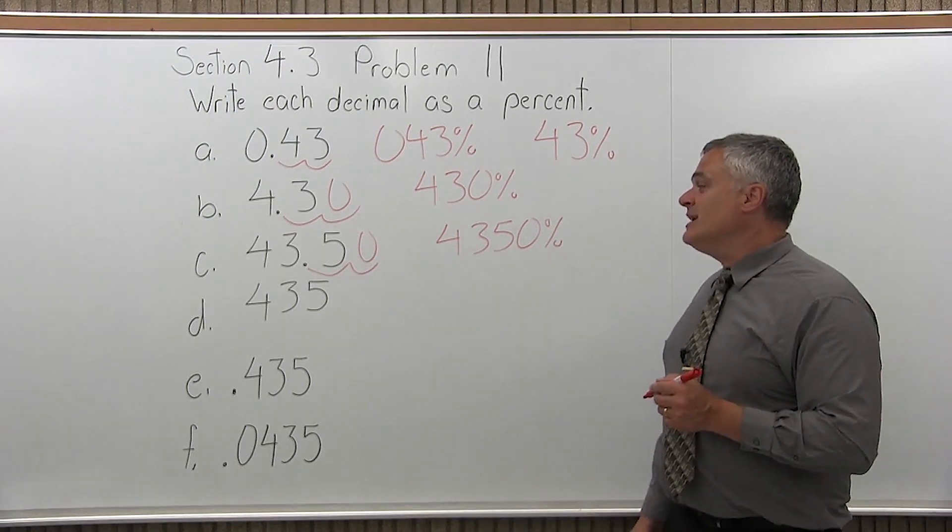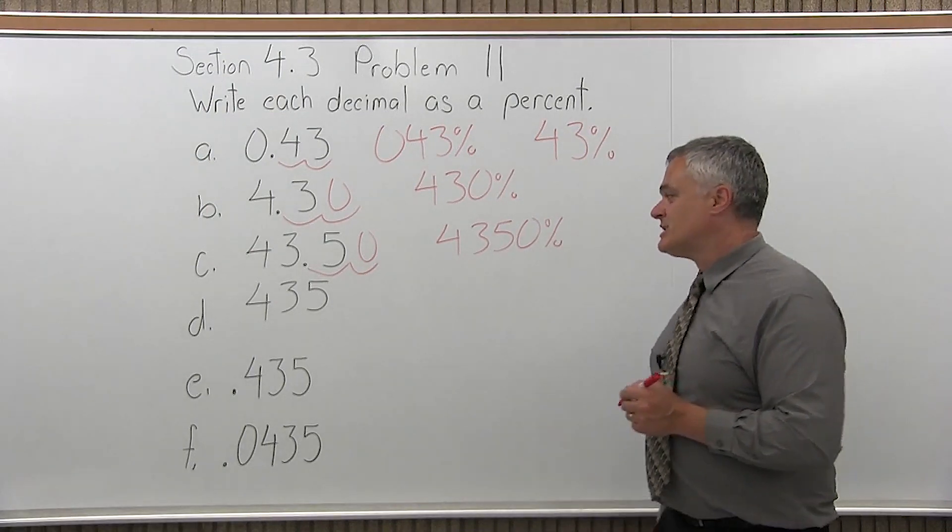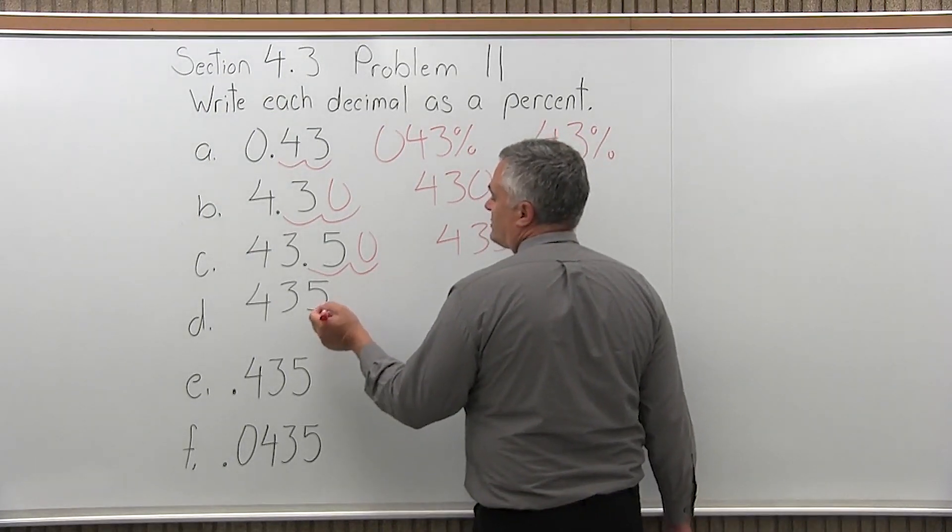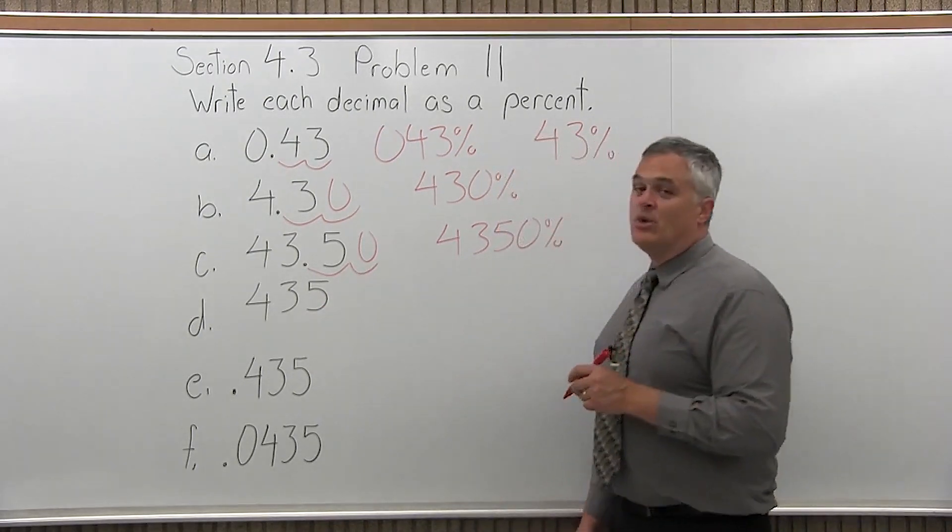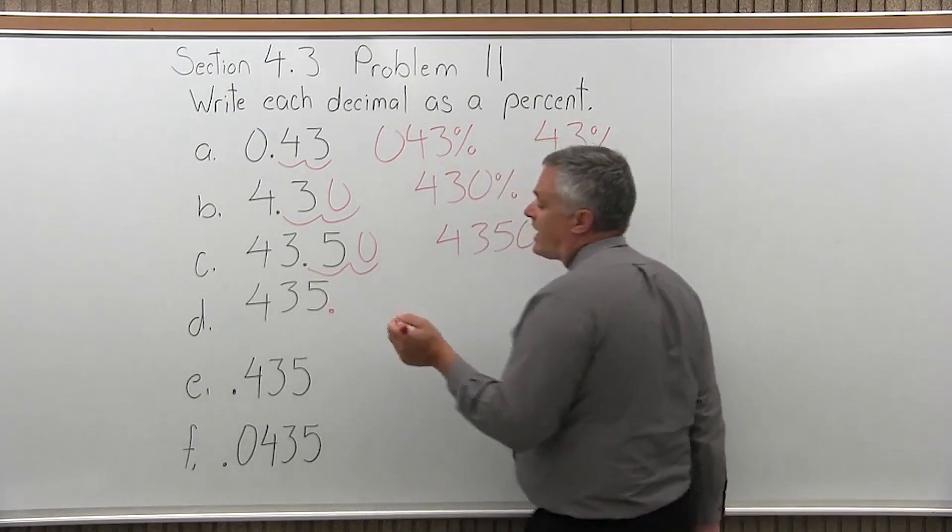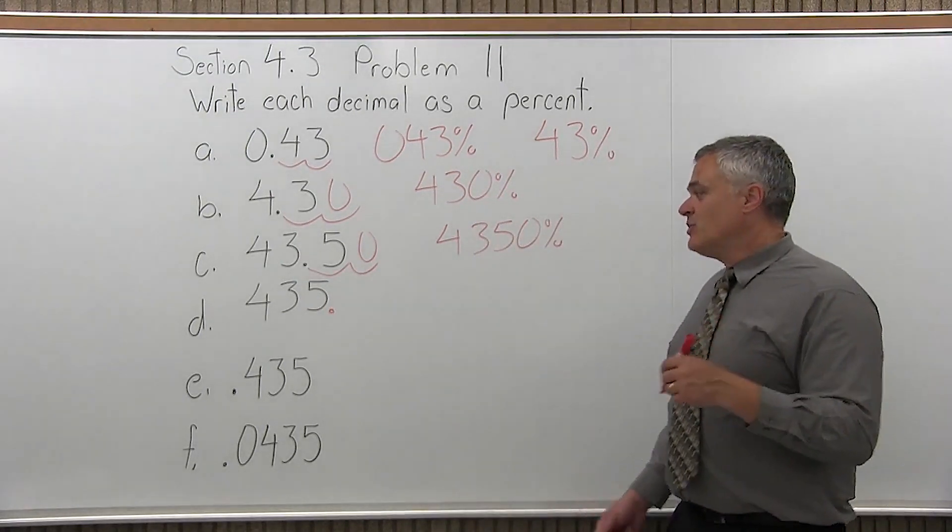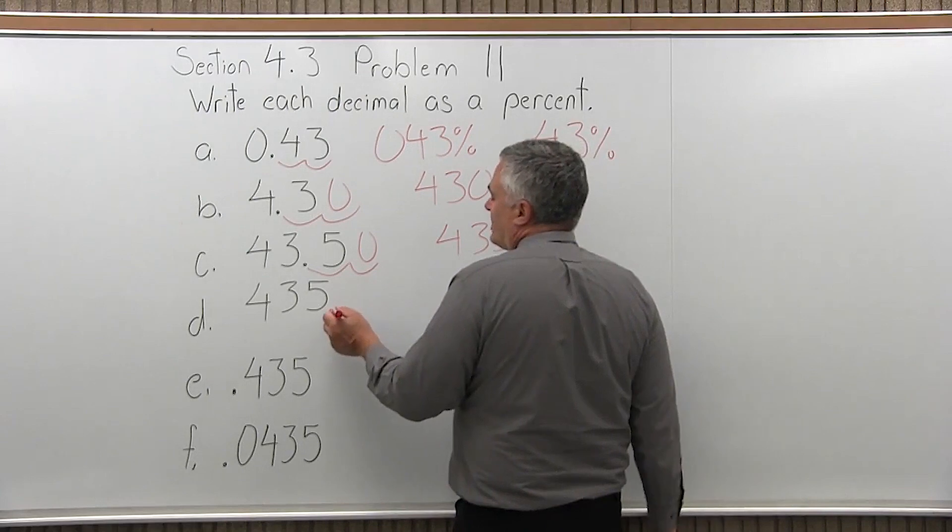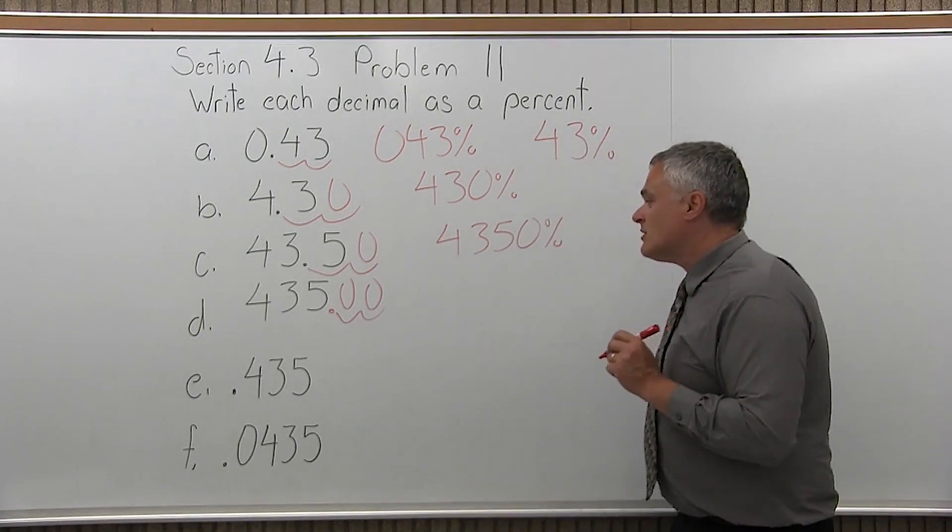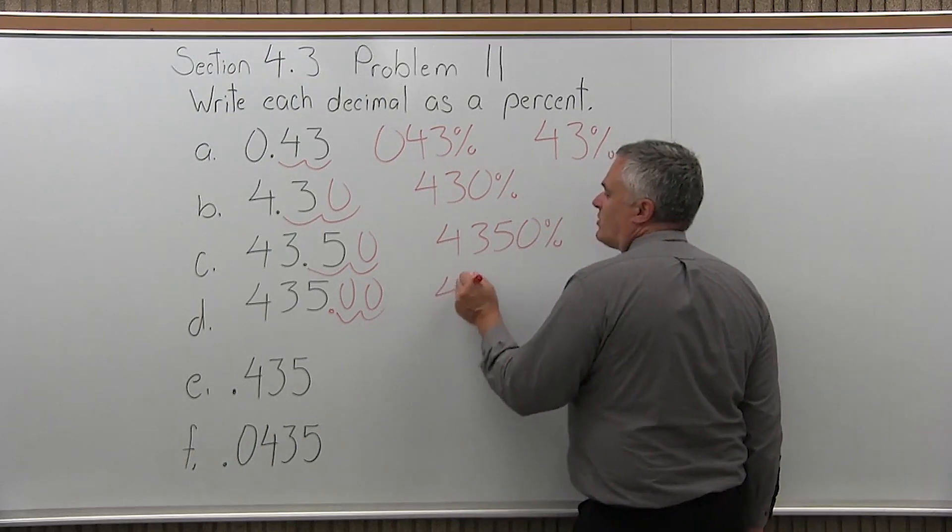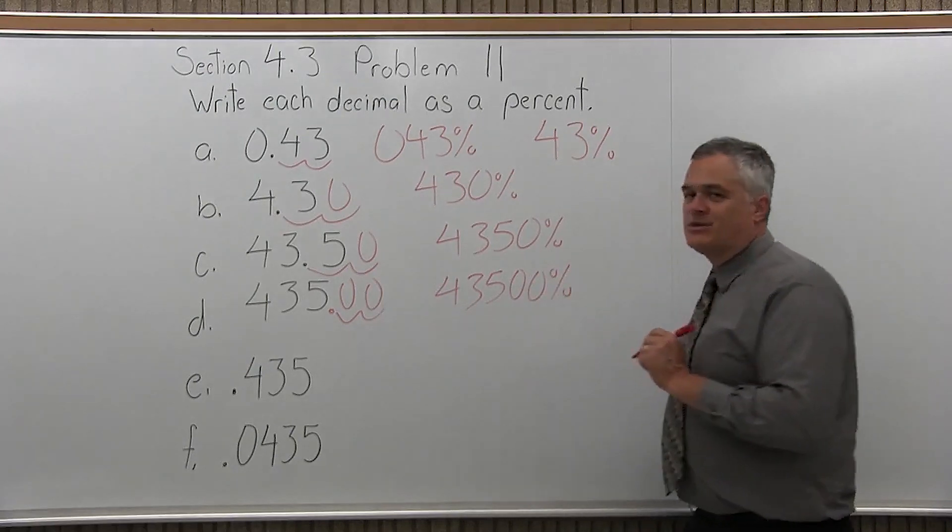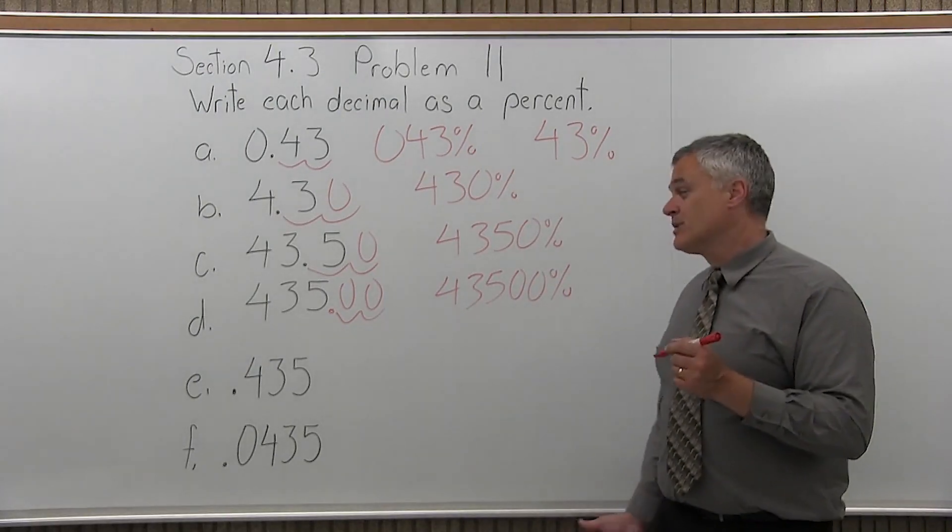Part D, 435, write that as a percent. That's going to be a very big percent. The decimal isn't written anywhere with 435, so you can assume it's after the five. Move it two positions to the right. There's nothing to move, but you move two anyway. They're blank, and you fill in those blank areas with zeros. So it would be 43,500 percent. That's a very big percent.